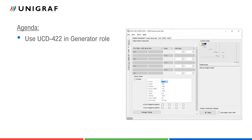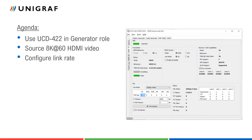In this demonstration, we will use Unigraf's UCD422 in generator role — that means as an HDMI 2.1 source device to test an HDMI connected receiver. We will show how to source 8K video and how to configure the HDMI link to carry this signal.